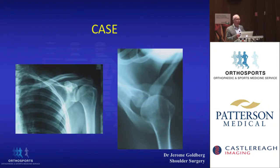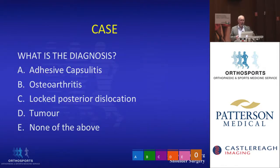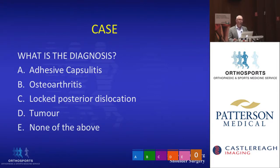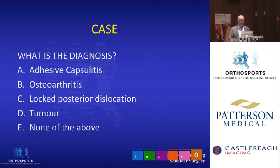We get the x-ray, which is all we need, and you can see it is pretty normal. So the next question is: what is the diagnosis? We have a middle-aged female with a three-month history of pain and limitation of movement, loss of both active and passive movement, and a normal x-ray. Is the diagnosis capsulitis, osteoarthritis, a locked posterior dislocation, a tumour, or none of the above?